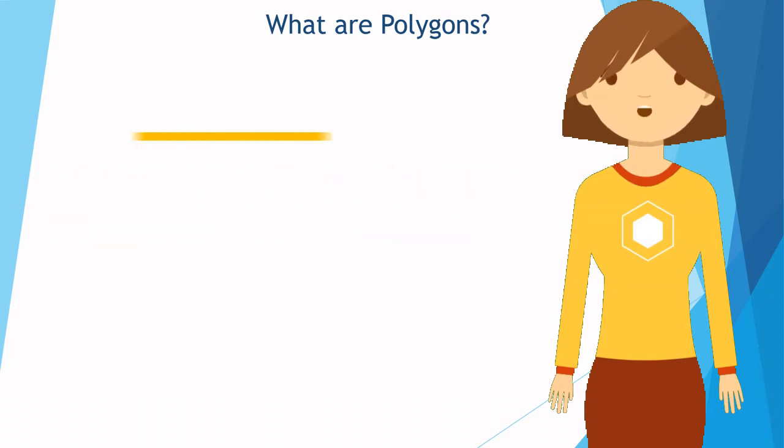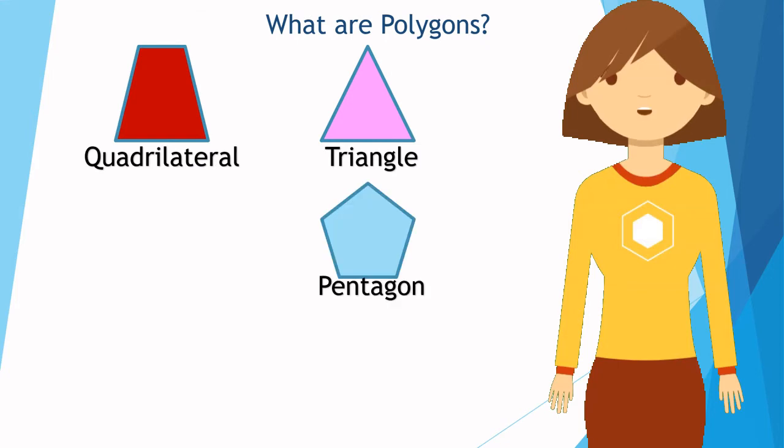For example, this is a polygon. Most common polygons are triangles, quadrilaterals, pentagons, hexagons, heptagons, and octagons.